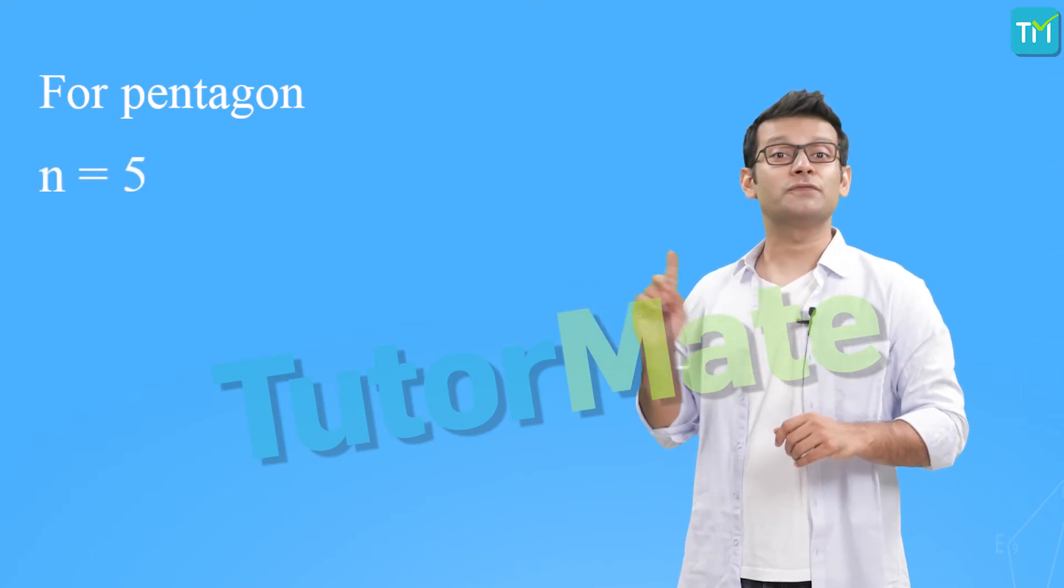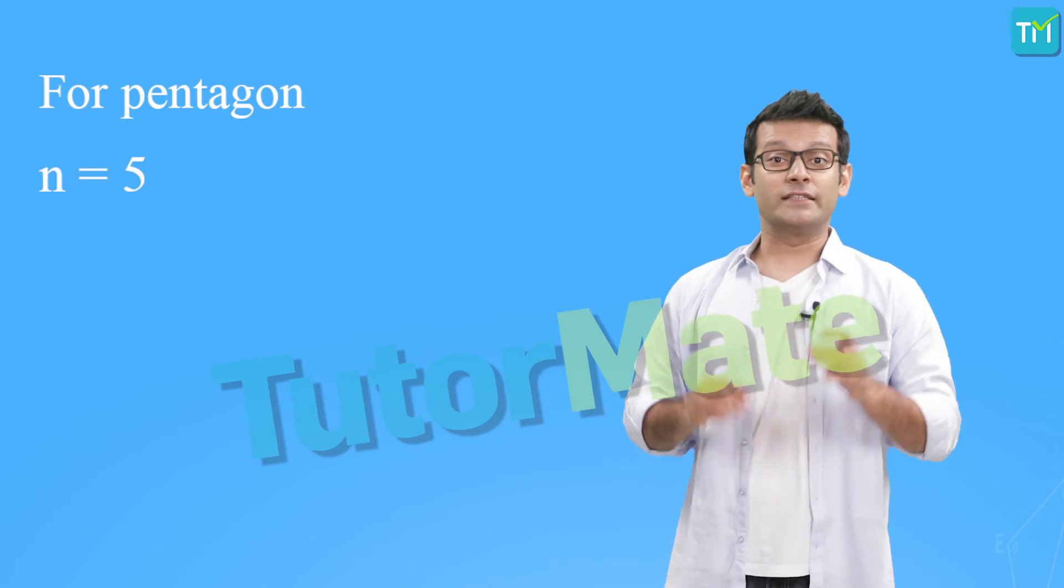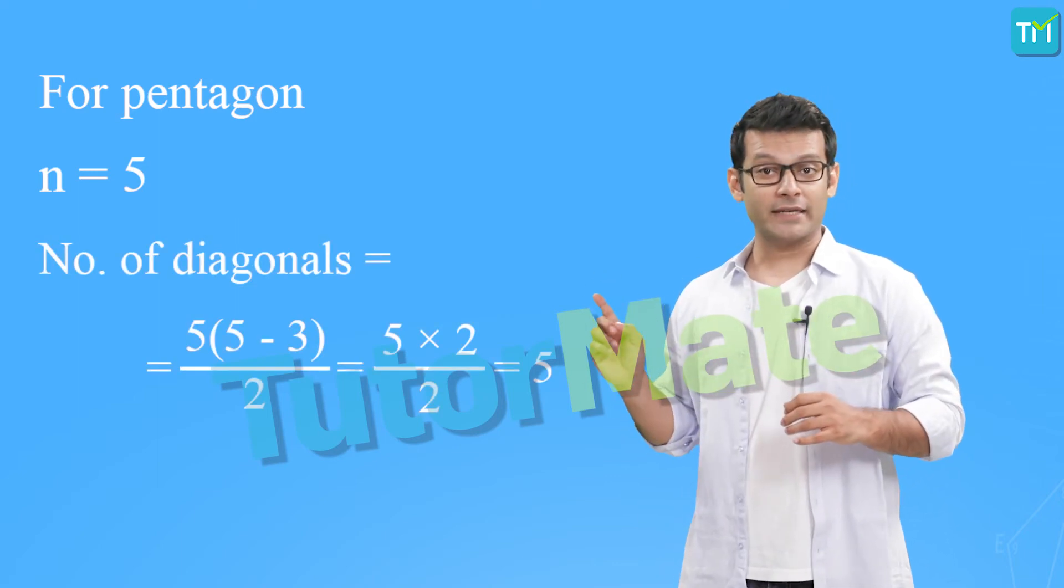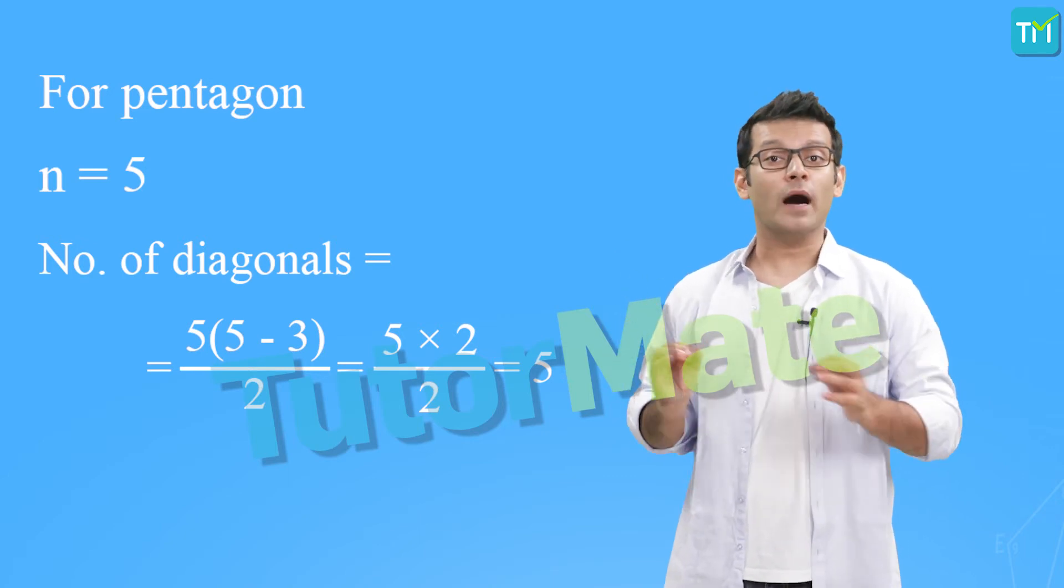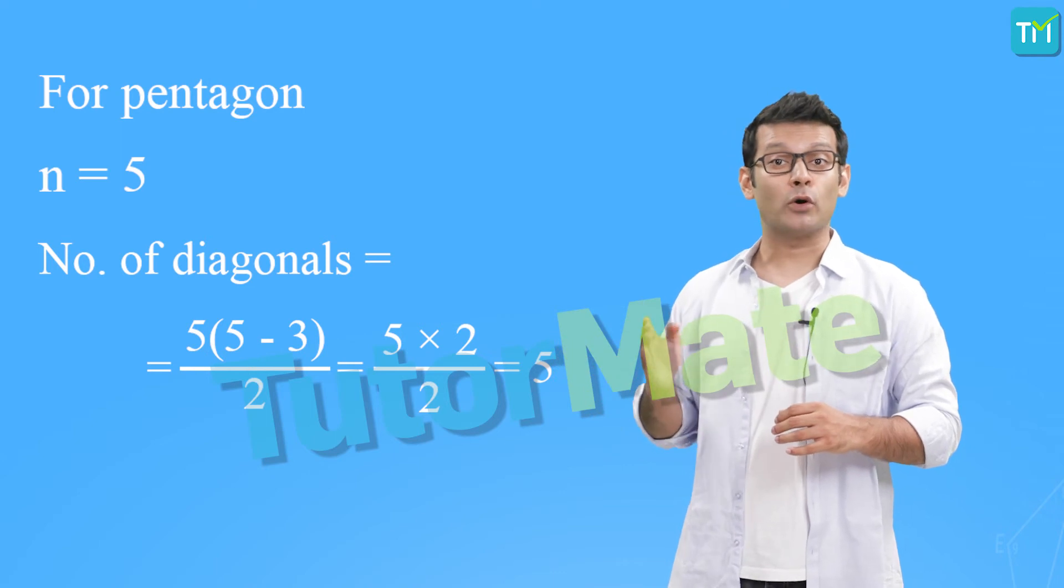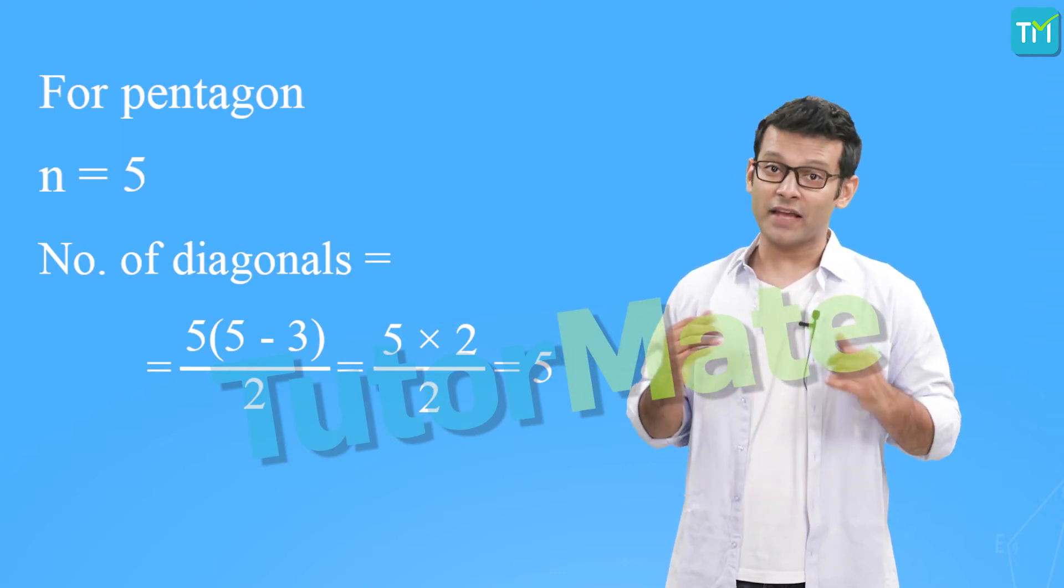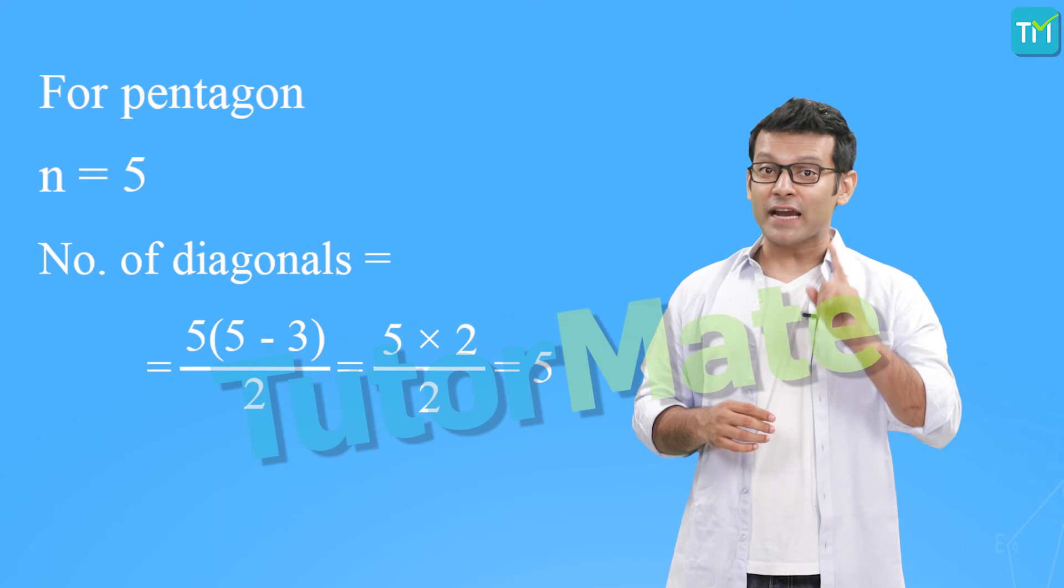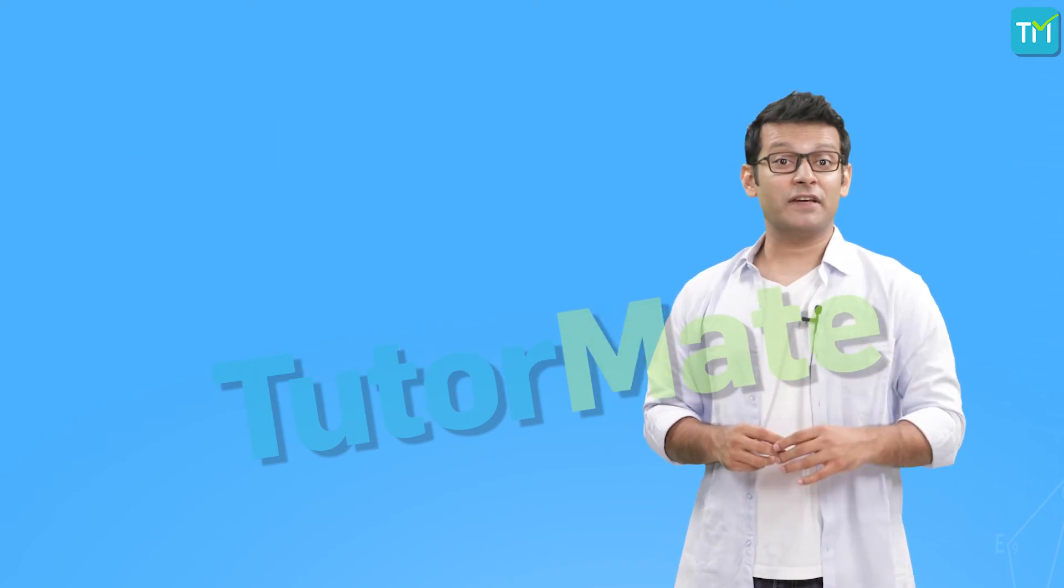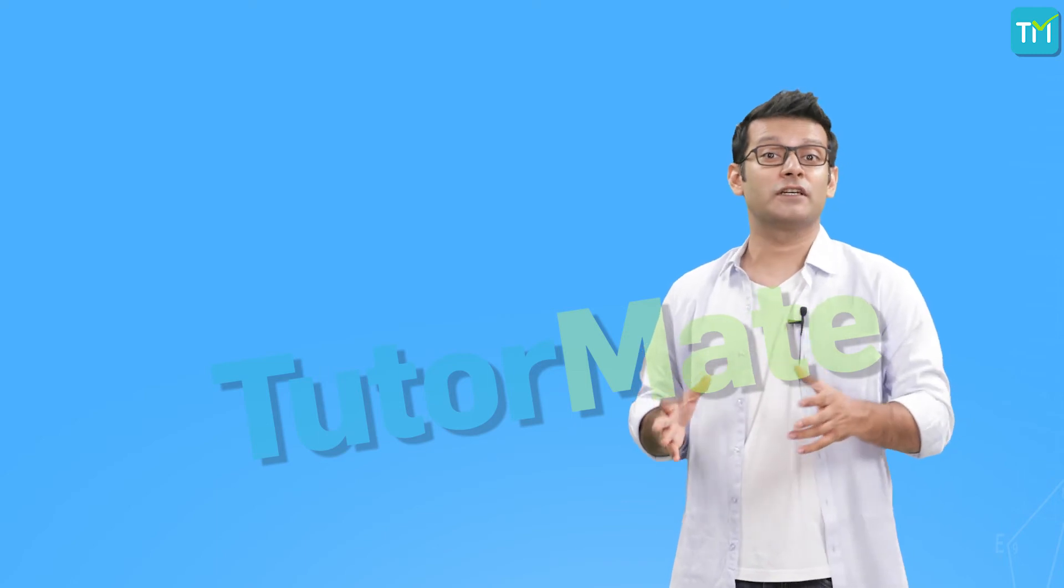Next if we consider a pentagon it has 5 sides. So, n is equal to 5. Therefore, the number of diagonals is equal to 5(5-3)/2 which is equal to 5×2/2 and that is 5. So, there are 5 diagonals in a pentagon. In fact, we can even verify this practically by drawing the figure of a pentagon.